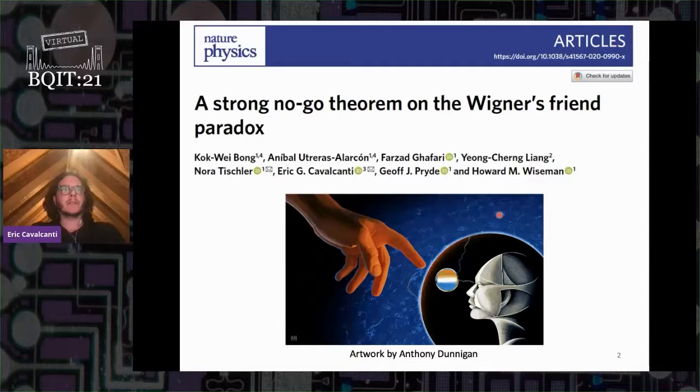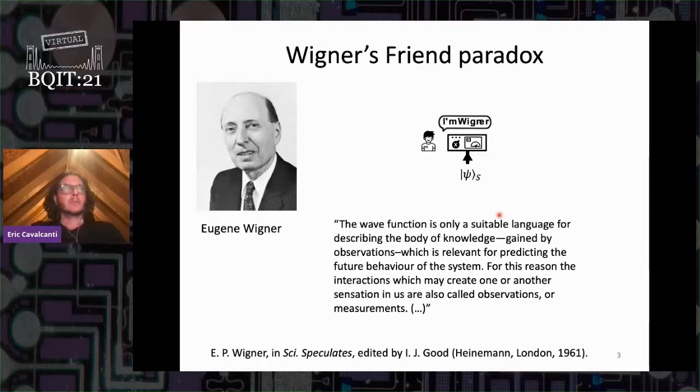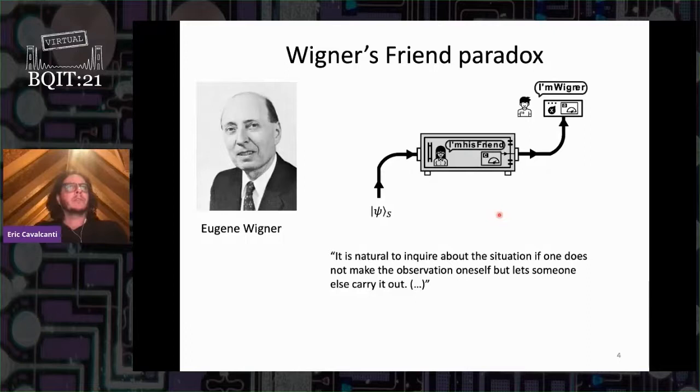Let's remind ourselves of Wigner's Friend paradox, proposed in 1961 by Eugene Wigner. The wave function is only a suitable language for describing the body of knowledge gained by observations which is relevant for predicting the future behavior of the system. It is natural to inquire about the situation if one does not make the observation oneself but lets someone else carry it out.